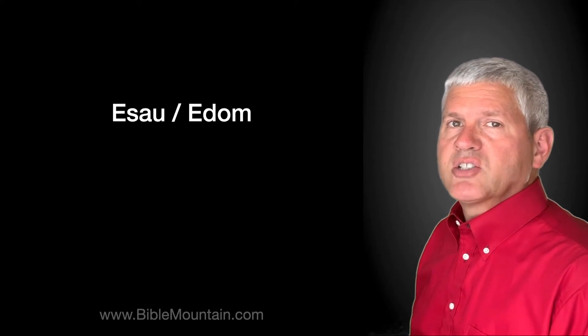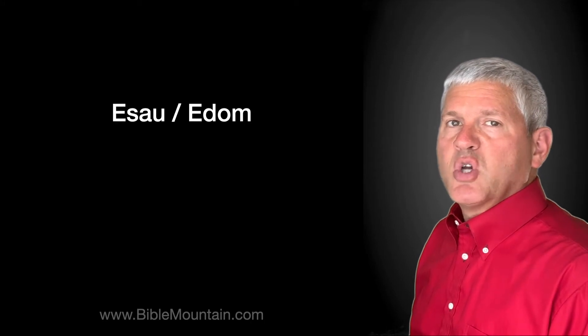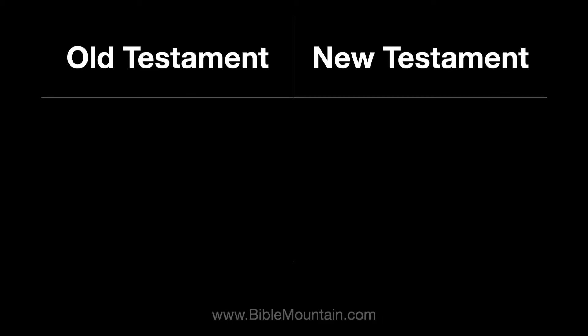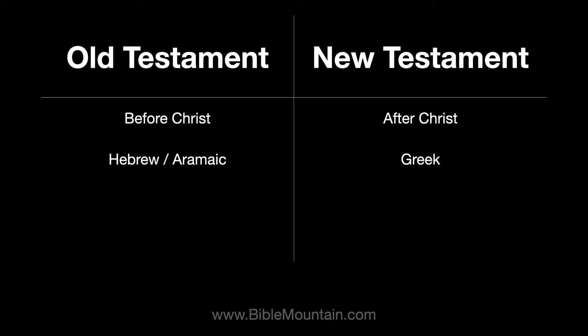Since Obadiah was written about Esau and Edom, I'm also going to show how the story in Obadiah fits into the overall story of Esau and Edom that we see throughout the Bible. The Bible is divided into the Old Testament and the New Testament. The Old Testament tells us about people and events before the time of Christ; the New Testament tells us about people and events during and after the time of Christ. The Old Testament was written in Hebrew and Aramaic; the New Testament was written in Greek. The Old Testament is primarily about Israel; the New Testament is primarily about the church. The Old Testament time period is what we call the Age of Law; the New Testament time period is what we call the Age of Grace.